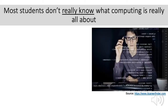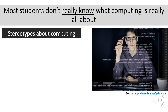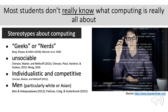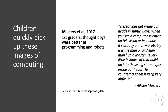Research on stereotypes about computing tends to show that people assume that those who do it are geeks and nerds, they're unsociable or awkward socially, and that the work and motivations for the work are individualistic and competitive, and that men do this work and are naturally better at it than women. Children pick up on these stereotypes early. A recent study of first-graders by Allison Masters and her colleagues found that both girls and boys thought that boys were better at programming and robots. Masters also notes how persistent these early-formed stereotypes can be.